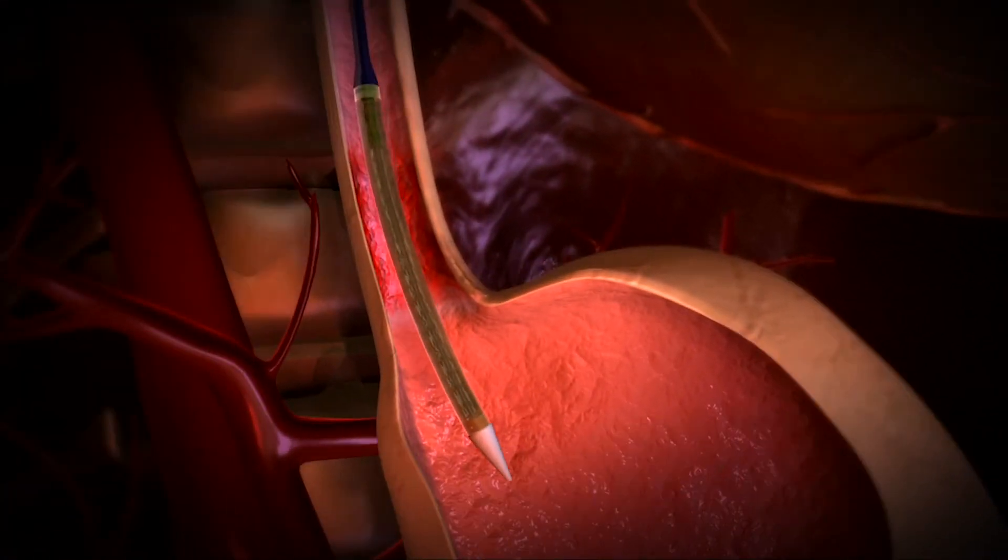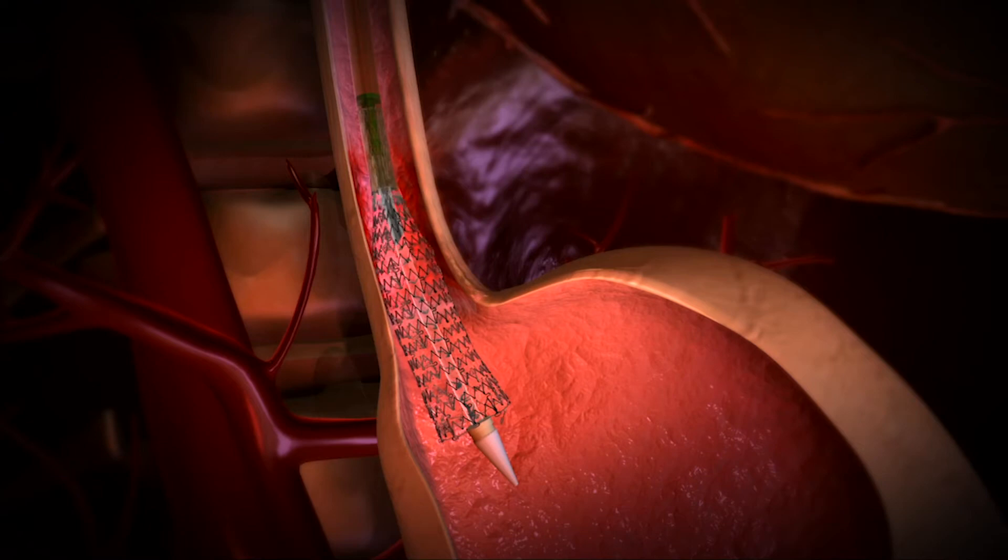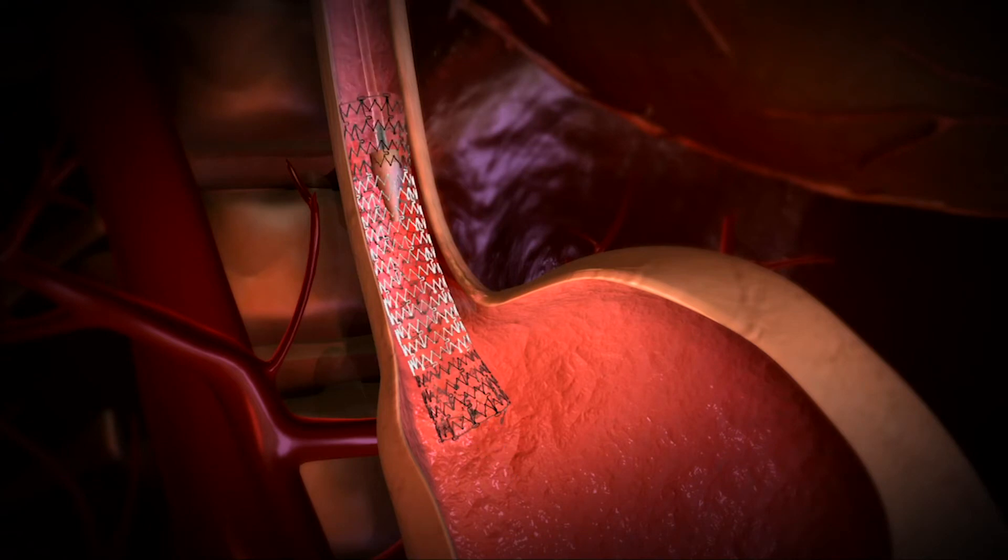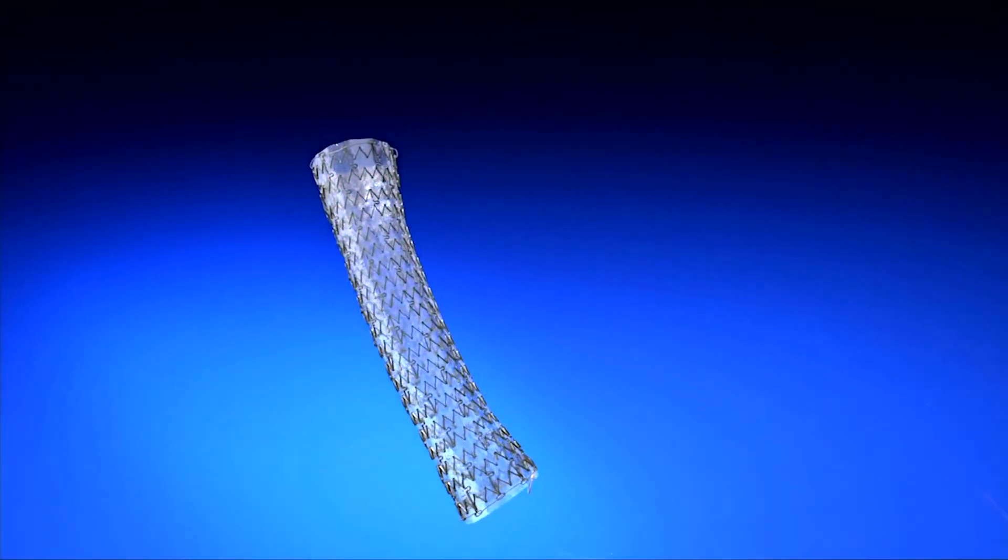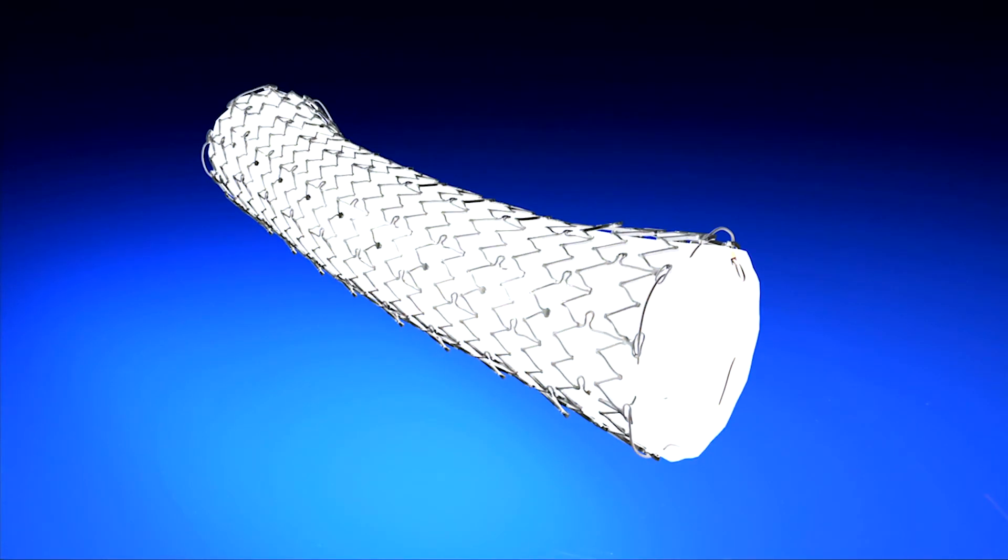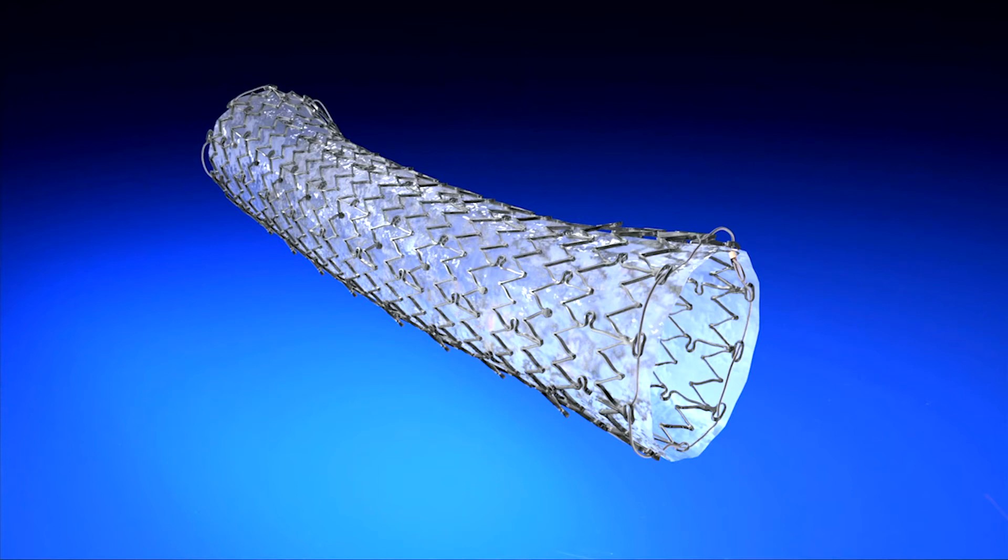The Endomax is designed to dilate a stricture while reducing tissue irritation and damage to healthy esophageal mucosa. The Endomax is fully covered in silicone which helps provide flexibility and durability of the stent.